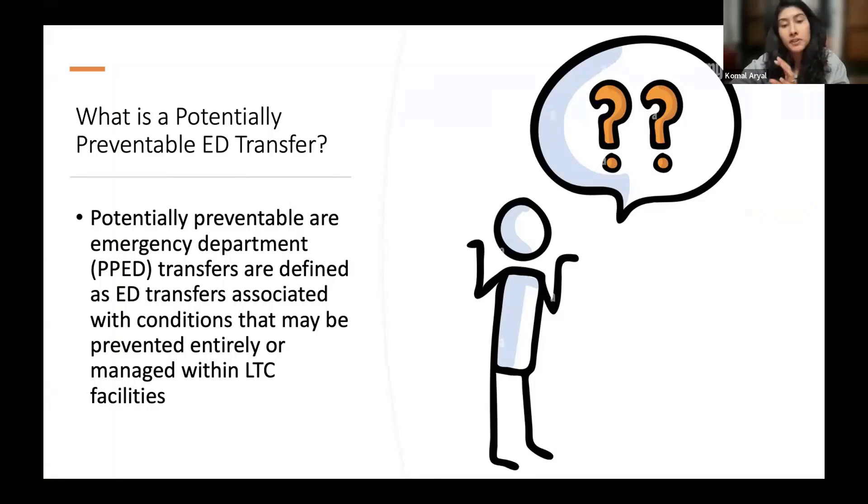Therefore, a non-potentially preventable emergency department transfer are transfers which could not be managed at the nursing home and acute care was deemed to be necessary.